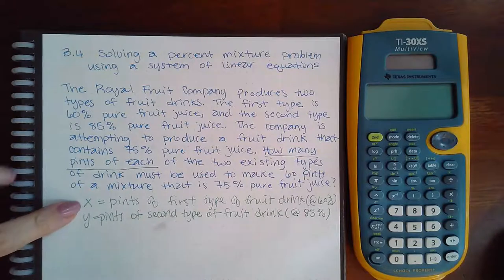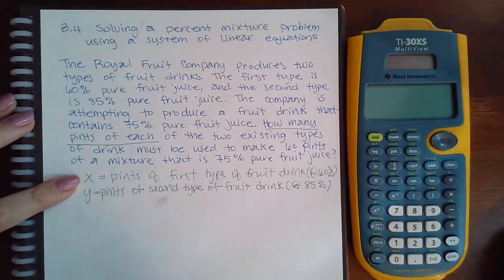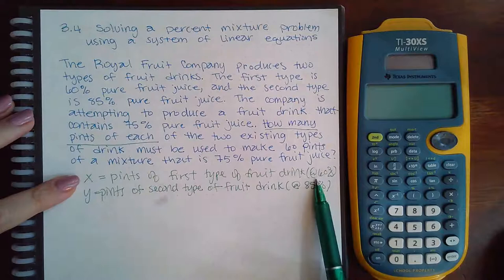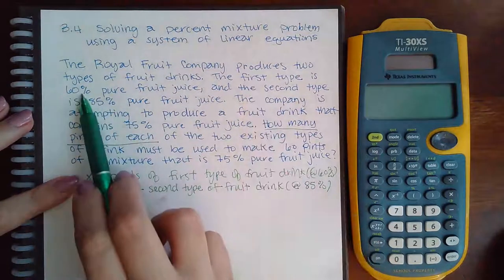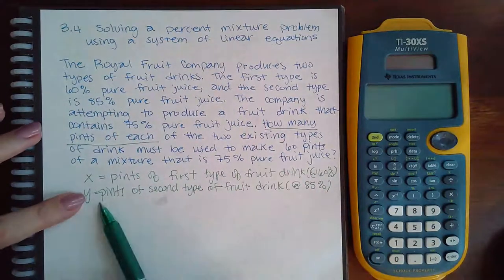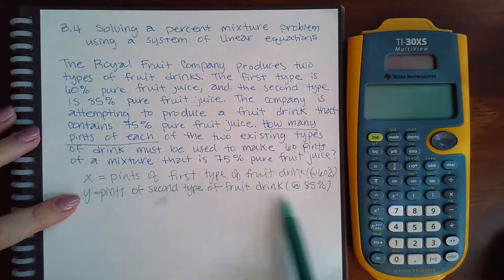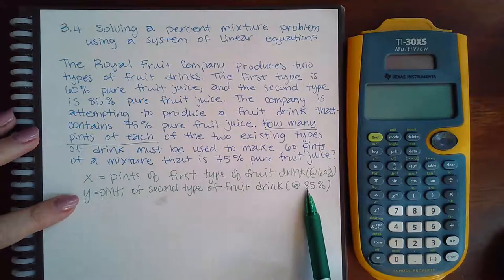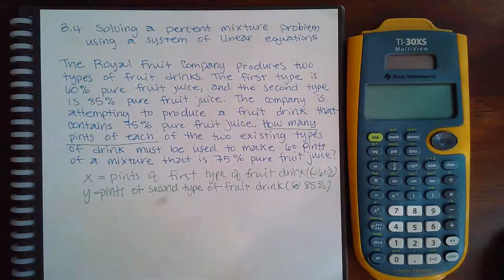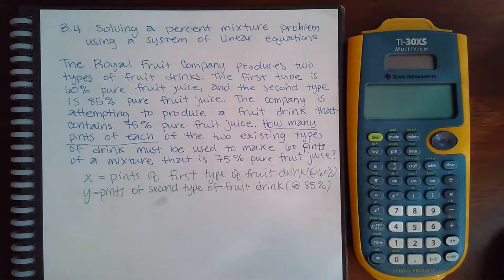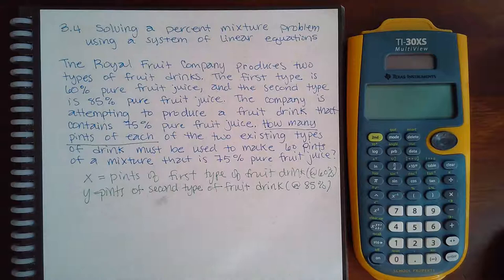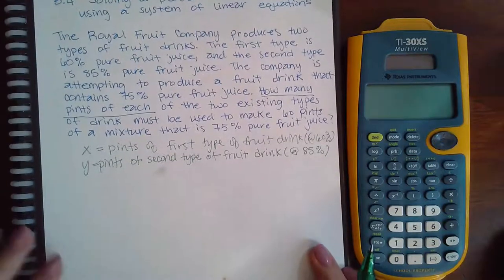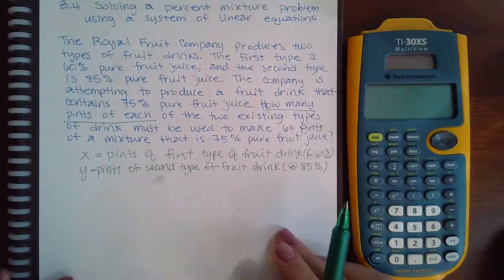I'm going to let x equal the pints of the first type of fruit drink which was the one at 60%, and then y will equal the pints of the second type which is the one at 85%. This is just here for me so that when I get my answers I can know which one goes with which. Let's go ahead and see what our equations look like.